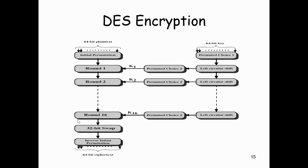These 64 bits are the ciphertext bits. So 64-bit plaintext is converted into 64-bit ciphertext. There are 16 rounds, and for each round we need a round key of 48 bits. K1 is the round key for round 1, K2 for round 2, and K16 for round 16, all 48 bits each. The encryption algorithm starts with a 64-bit key, which is converted into a 56-bit key, and this 56-bit key is used to generate the 48-bit round keys. The key length in DES is 56 bits.